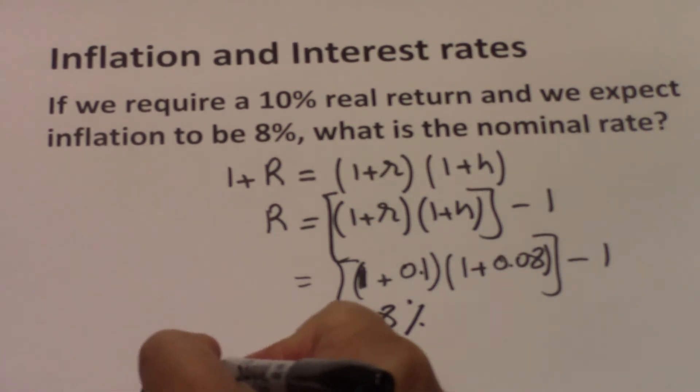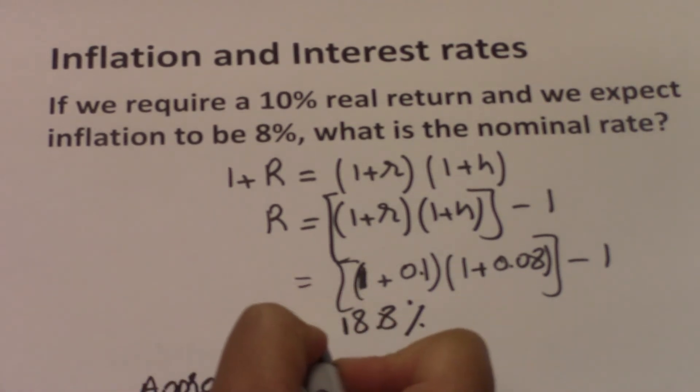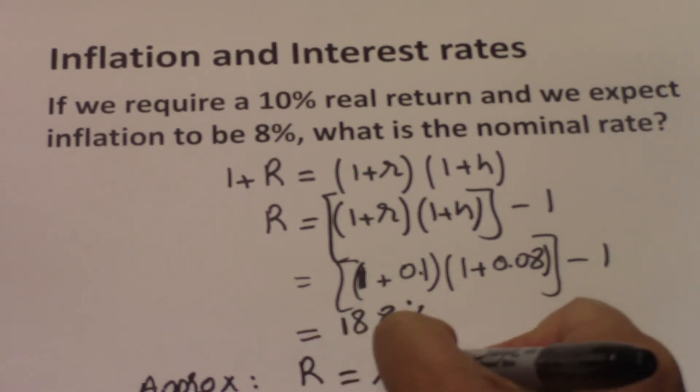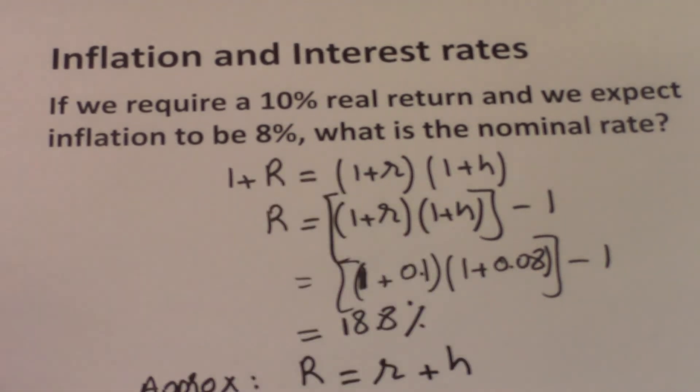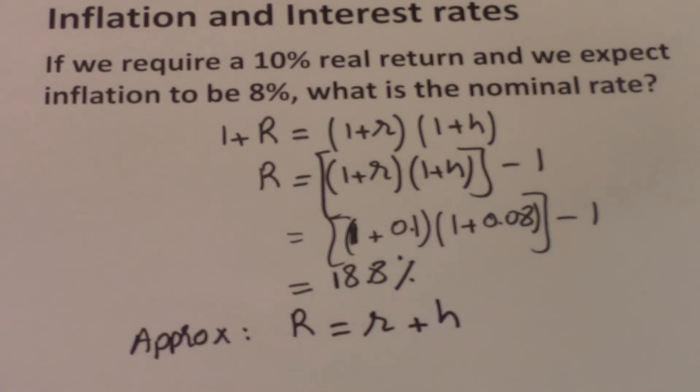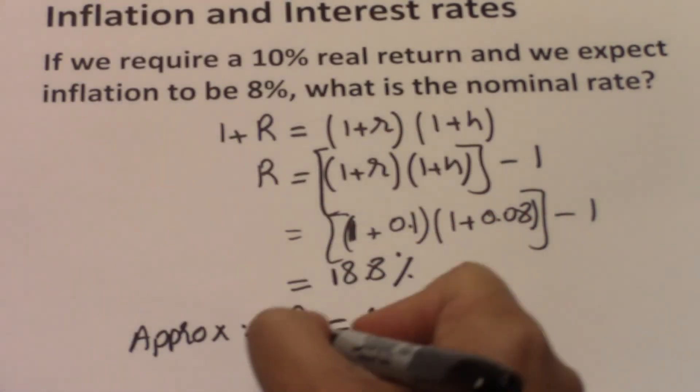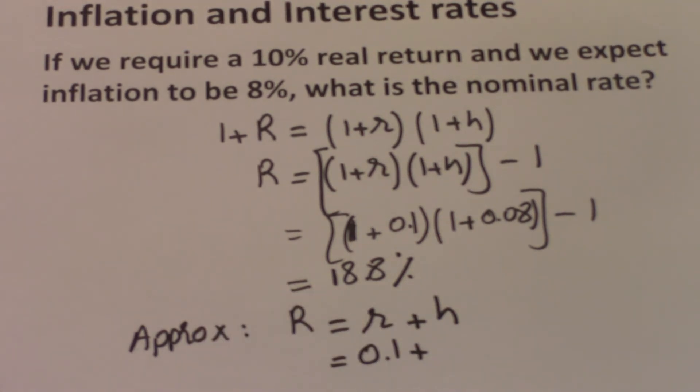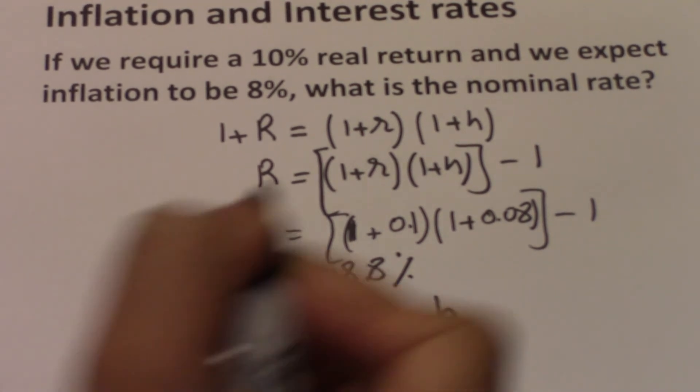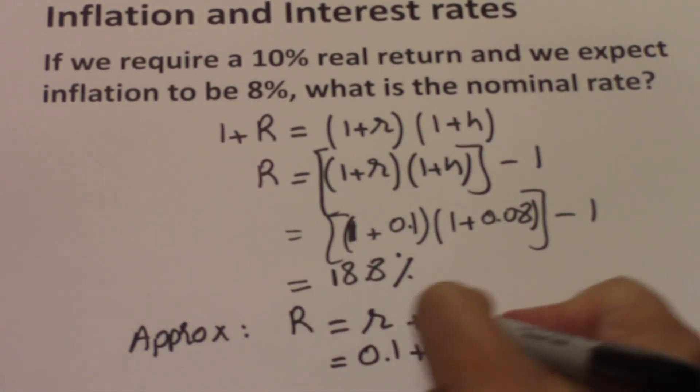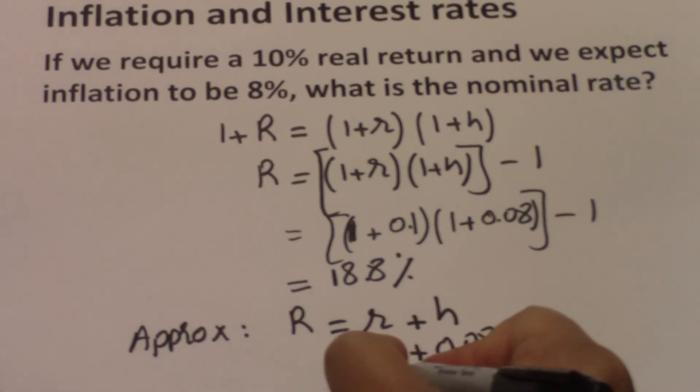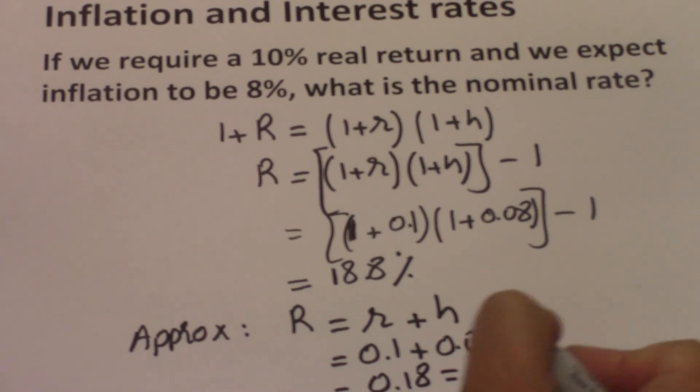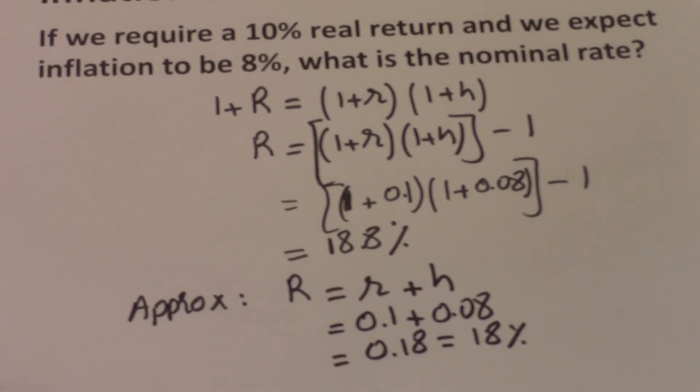You can also get the approximation. The approximation equation says that nominal rate equals real rate plus inflation. The real rate in this case is 10% or 0.1 plus the inflation of 8% or 0.08, which gives us a nominal return of about 0.18 or 18%. You just take 0.18 and multiply by 100.